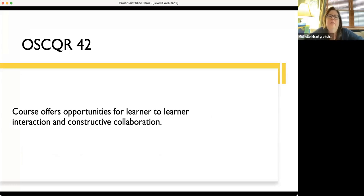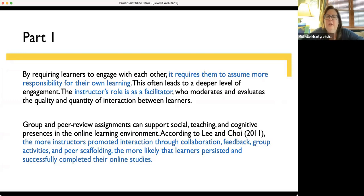OSCQR 42. Course offers opportunities for learner-to-learner interaction and constructive collaboration. They have to collaborate. In order for you to get your OSCQR 3 badge, you have to have real learner-to-learner collaboration in the course. It's talking about letting the learners engage with each other and they will assume more responsibility for that learning. The more autonomy you give them piece by piece over the semester, the more they will take responsibility for their own learning, especially adults. You become a facilitator. Instead of a sage on stage, you're a guide on the side. You are a facilitator of what's going on in the class, allowing students to take charge, to voice, and work through what they're doing.